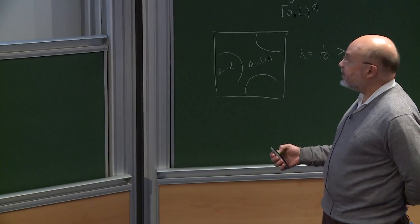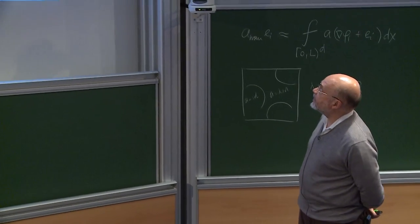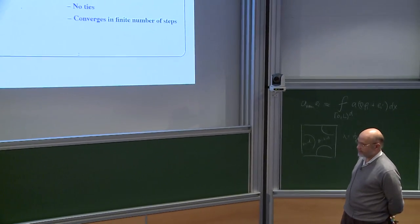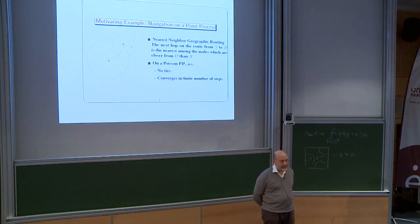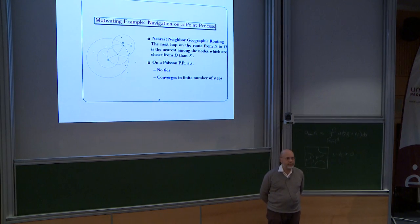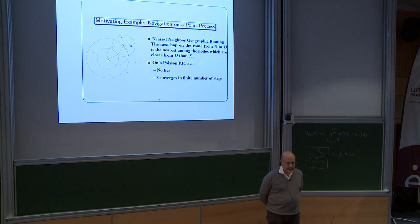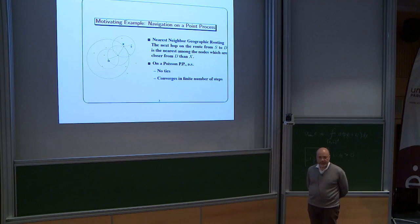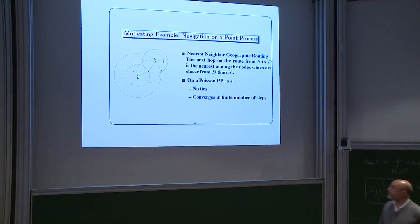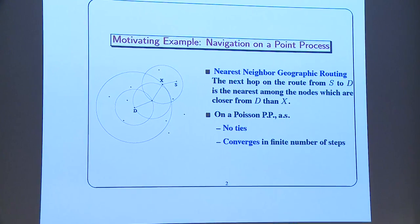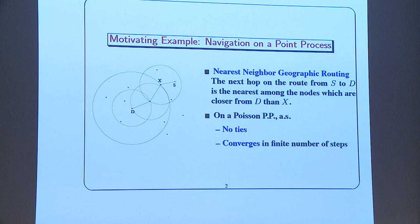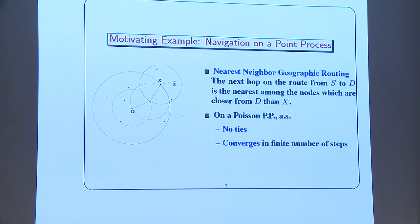The motivation is what we call navigation on the point process. A point process is a random measure. Assume you sit at a point, you see the configuration — a counting measure — around you, and based on what you see, you decide to move to another point. The simplest navigation, which might be called nearest-neighbor geographic routing, is used in many algorithms in practice. You are at point X, this is the source, this is the destination, and you do the simplest thing: the next hop is to go to the nearest among the nodes which are closer to the destination than where you are.